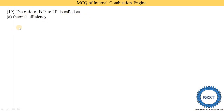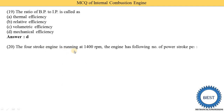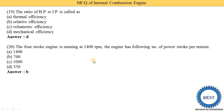Next MCQ: a four-stroke engine is running at 1400 rpm. What is the number of power strokes per minute? Options: 1400, 700, or 350. In a four-stroke engine, one power stroke occurs every two revolutions, so we divide 1400 by 2 to get 700. The correct answer is option B — 700 power strokes per minute.